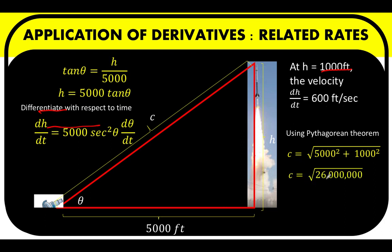So solving now for c, 5,000 squared plus 1,000 squared equals 26 million. And getting the square root of 26 million, we arrive at 1,000 square root of 26 feet. That is this distance c.